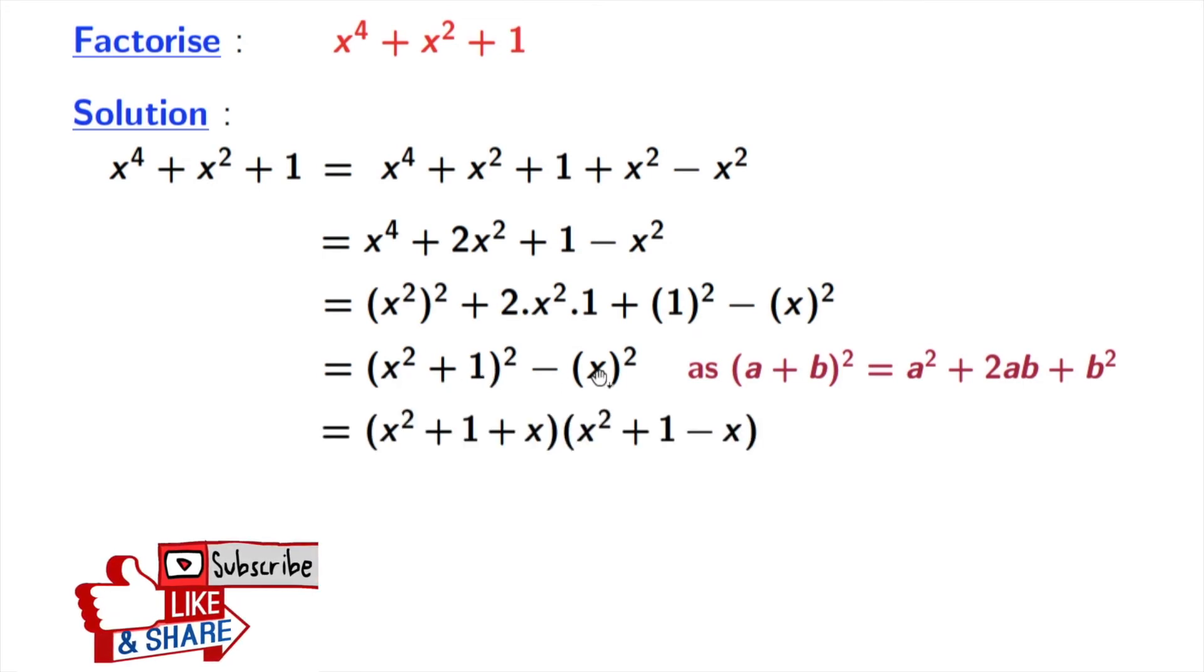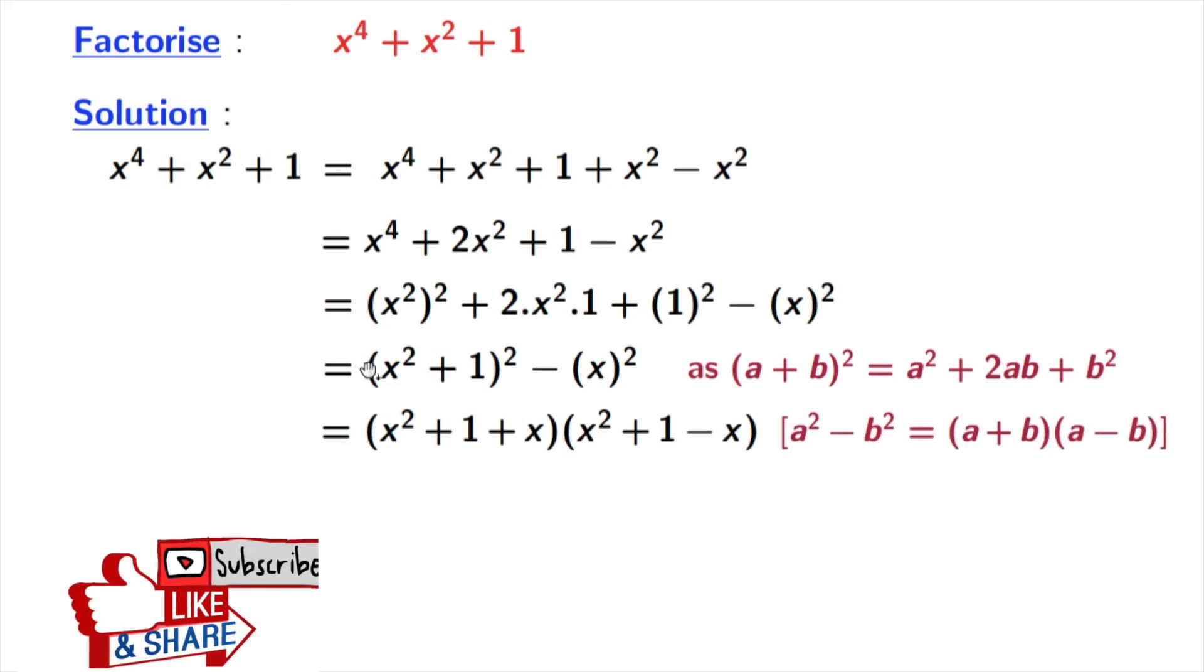Now again look that this is in the form of a^2 - b^2. So this gives us (a + b) times (a - b).